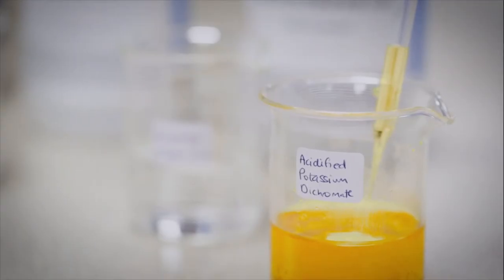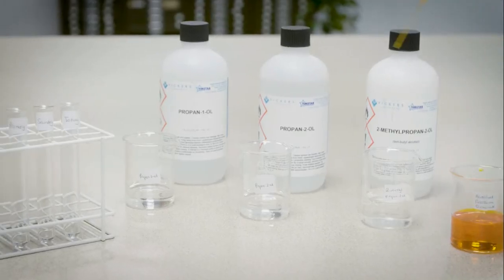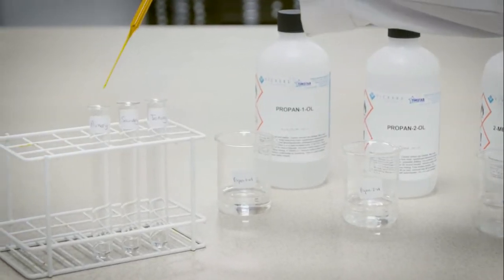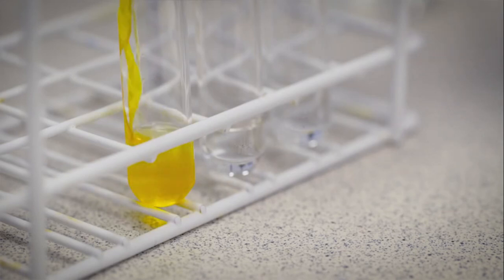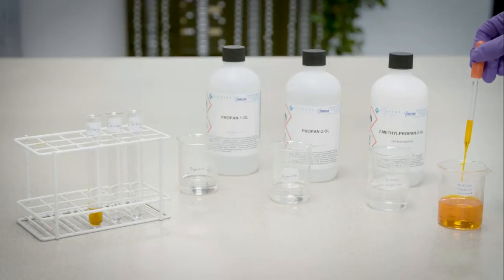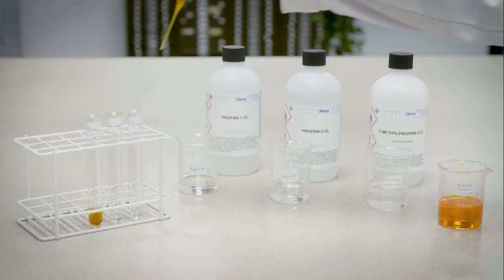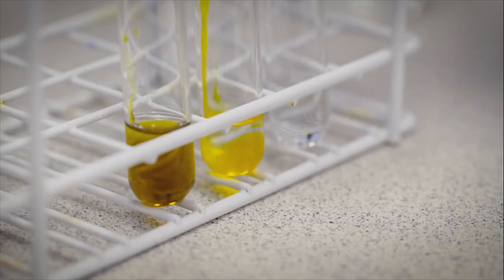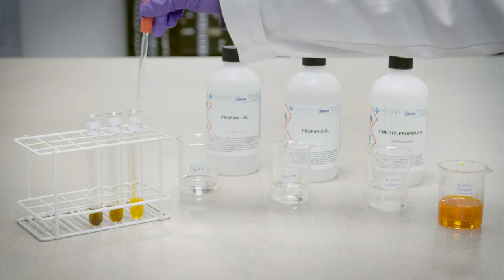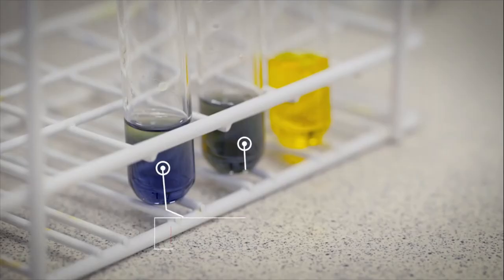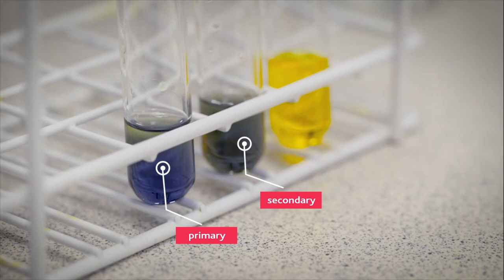Acidified potassium dichromate solution is then added to each test tube. After a few minutes, the test tubes containing the primary and secondary alcohols have turned green-blue. The test tube containing the tertiary alcohol is unchanged.